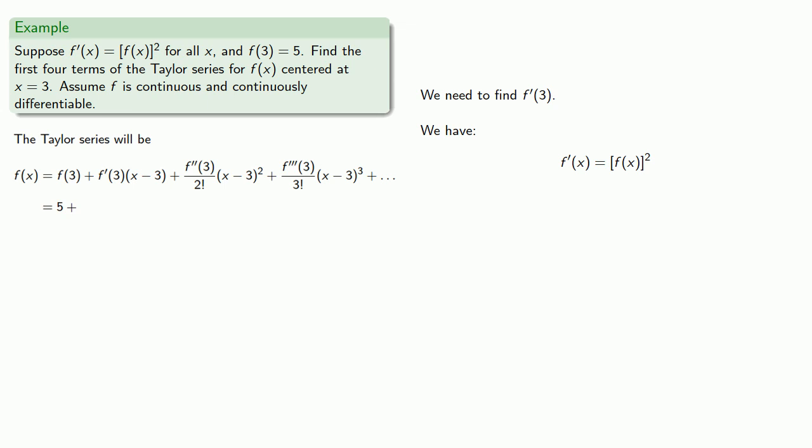Well, that's [f(x)]². And at x = 3, this will be 25, and so that gives us the second term in our Taylor series.